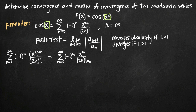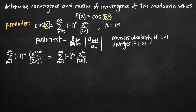At this point, we need to use a convergence test to determine whether this series in its simplified form converges. Because we have 2n factorial in this series, it's likely we'll use the ratio test. Whenever you see factorial, the ratio test is probably the first thing you want to try.